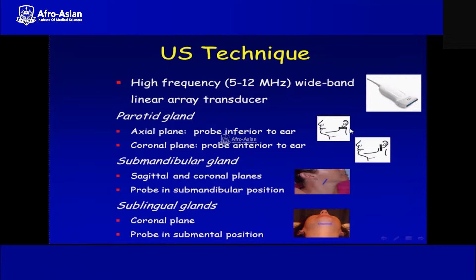For the coronal and axial planes, the probe is placed inferior to the ear. For the submandibular gland, sagittal and coronal plane scanning is performed with the probe in the submandibular position — placed below the mandible. For the sublingual gland, the probe is placed below the chin in the coronal plane with the probe in the submandibular position.